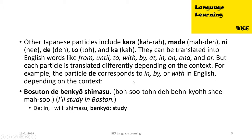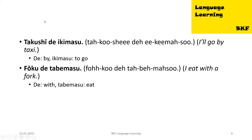Now let us see some examples. 'Bosuton de benkyo shimasu', which means 'I'll study in Boston.' Here 'de' means 'in'. Bosuton is Boston, shimasu means 'I will', and benkyo means 'study'. Next example: 'Takushi de ikimasu', which means 'I'll go by taxi.' In this context 'de' means 'by', and ikimasu means 'to go'.